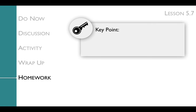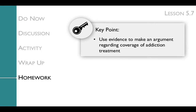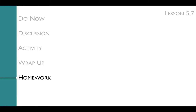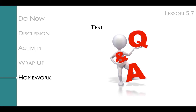The key point of the homework is to use evidence to make an argument regarding coverage of addiction treatment. Students will write a letter advising a government agency on whether health insurance should have to cover addiction treatment. Additionally, now is an excellent time to have a quiz or test on the material covered, either on Unit 5 or the module as a whole. You can find sample questions and answers posted online, which you can adapt for your classroom.